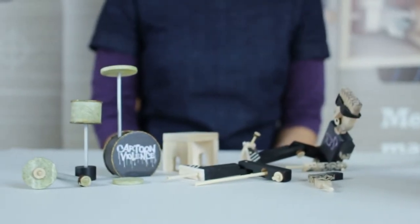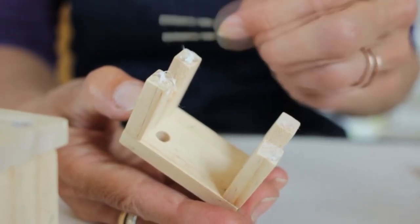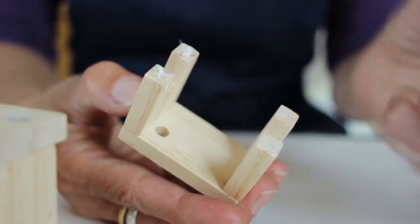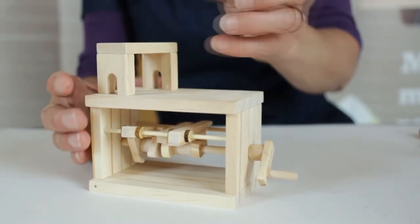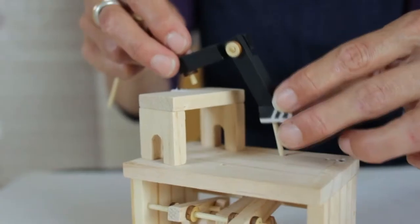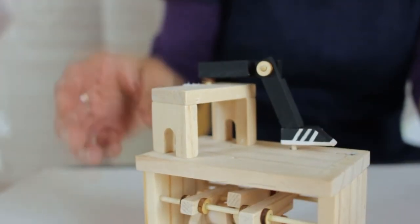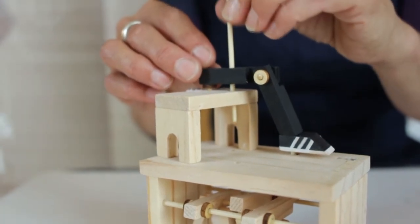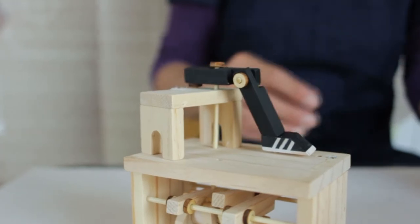So there we have all the bits ready for final assembly. Position the stool and the limbs and the figure so that all the pegs line up in the holes. Try to do this without glue first. As each piece goes together, you can test it to see if it's working.